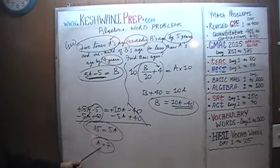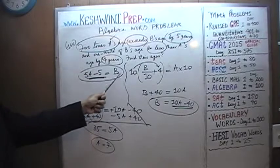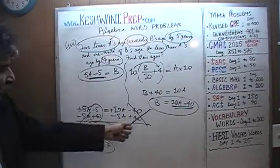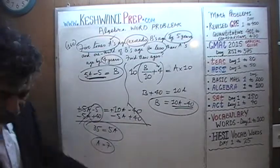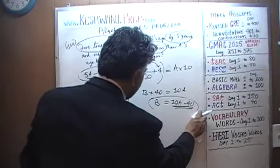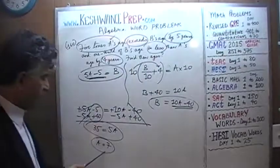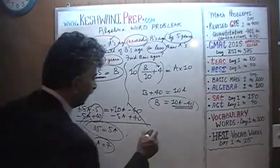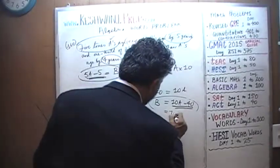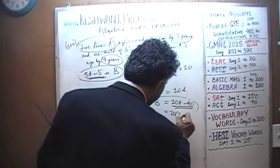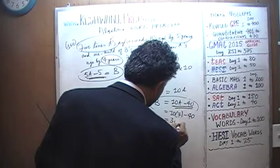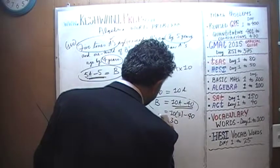Now we know A's age, we can figure out B's age from either equation. Let's use B equals 10A minus 40. A is 7, so B equals 10 times 7, which is 70, minus 40, which is 30. There we go.